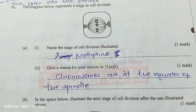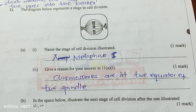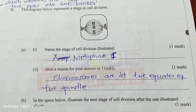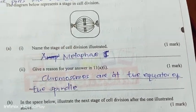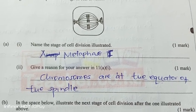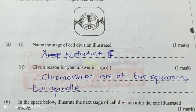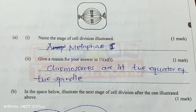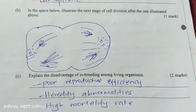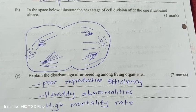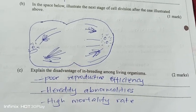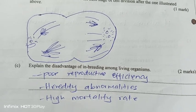The diagram represents a stage in cell division — name the stage represented. The stage is metaphase 2, because all the chromosomes are at the equator of the spindle and they are not yet separated. The next stage to illustrate is where the chromosomes now move to the opposite poles.